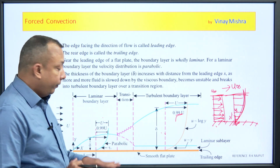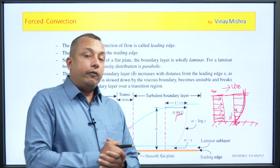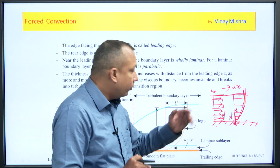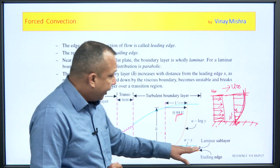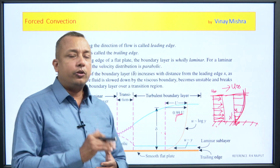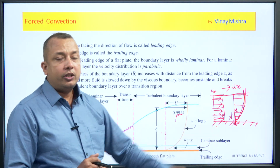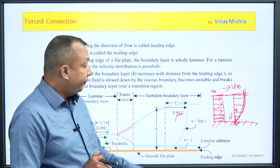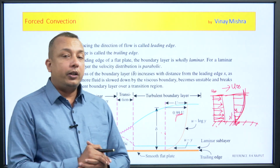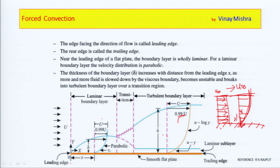We need to see the same concept here: if the boundary layer formation is in the laminar region it is called a laminar boundary layer; if formation is in turbulent region it is called turbulent boundary layer. The 99 percent of u-infinity is considered as the thickness. In turbulent flow there is a region near the wall where properties match laminar flow — that region is called the laminar sub-layer.